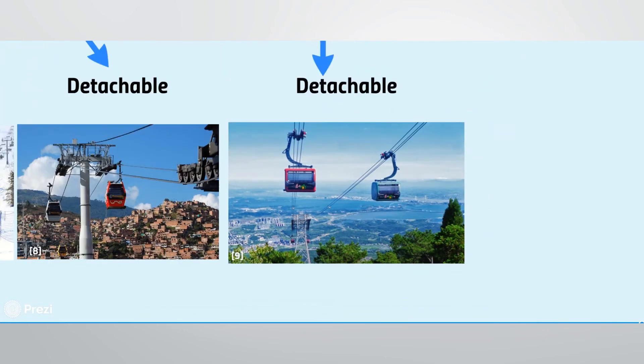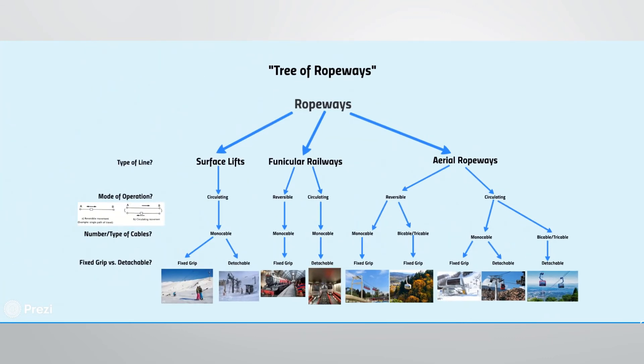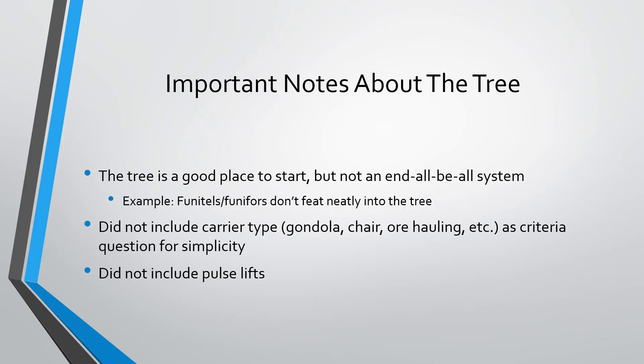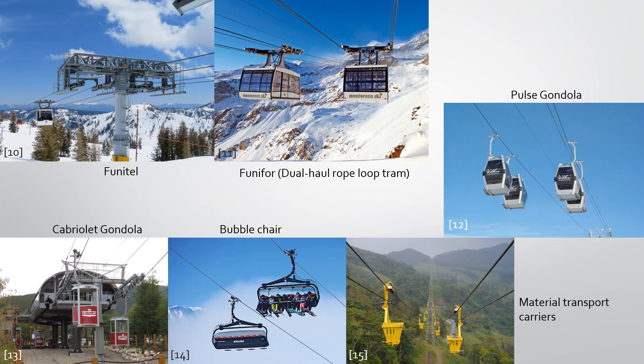And there you have it — the Tree of Ropeways. It is important to note that the tree is a good place to start, but not an end-all be-all system. There are a number of things omitted from the tree for clarity, such as carrier type and pulse lifts, and a select number of lifts that don't quite fit evenly into a classification, such as Funatels and Funifors. The images on the top left are systems that were omitted from the Tree of Ropeways because they didn't quite fit neatly into the classification system.